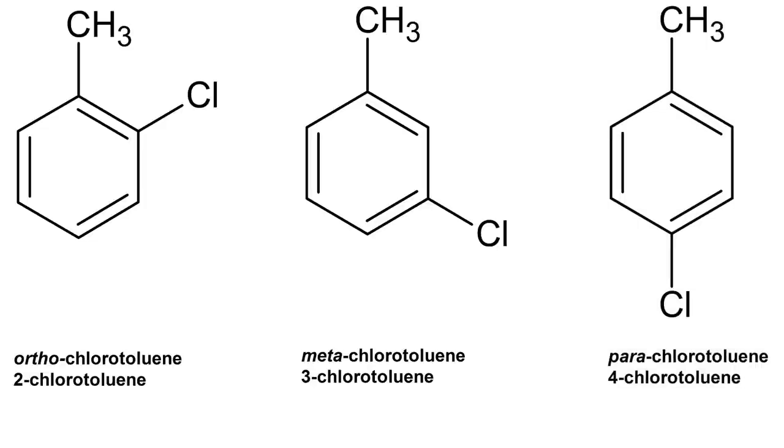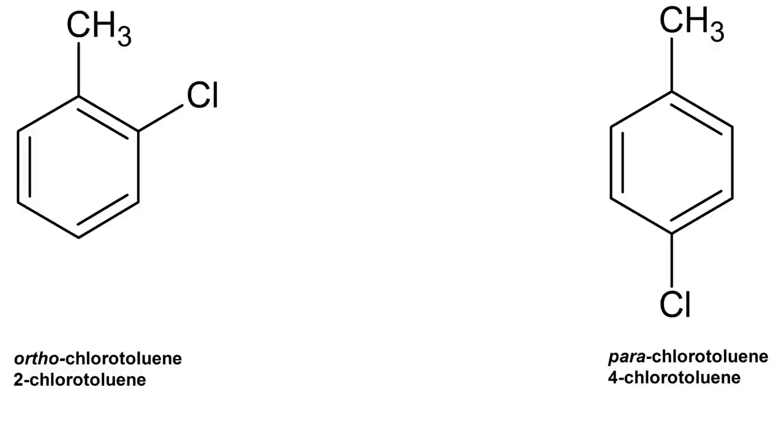Now in electrophilic halogenation the methyl group actually affects the electron distribution of the aromatic ring and meta-chlorotoluene product is negated so only trace amounts are produced. The major products are ortho- and para-chlorotoluene.